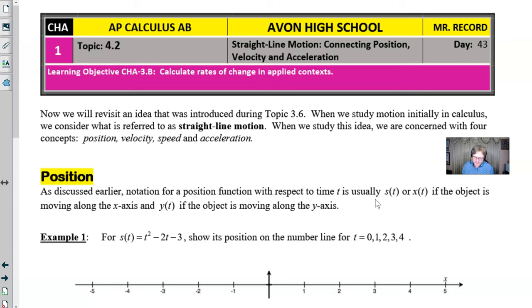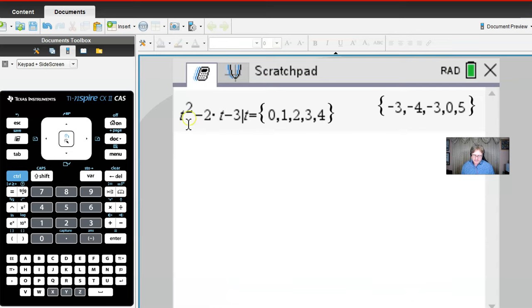For this very simple example, if s(t) is t squared minus 2t minus 3, show the position on the number line for times 0, 1, 2, 3, and 4. Well, you could plug those numbers very easily into that equation. You probably wouldn't need a calculator, however if you wanted to use a calculator there would be nothing against it. You could define the function on a machine like the TI-Nspire. If you want to enter all these in at once, you would use these braces and separate all the numbers by commas.